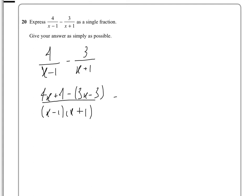So therefore, we're going to end up with 4x plus 4 minus 3x plus 3, all over x minus 1 times x plus 1.